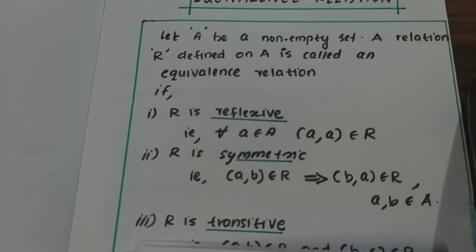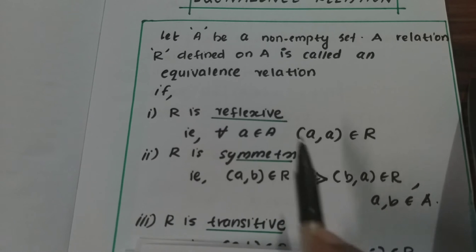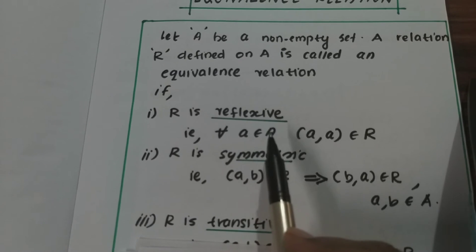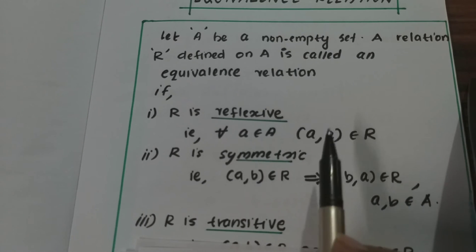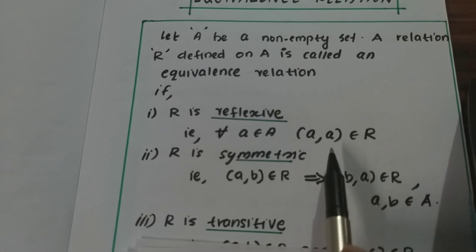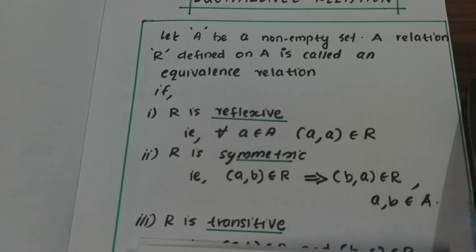Now let us look at these three properties. Reflexive means: for every element a in set A, the pair (a, a) belongs to R. That is reflexive — every element is related to itself. So for all elements in A, we have (a, a) in R. That is the reflexive property.